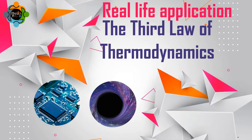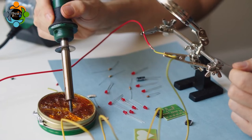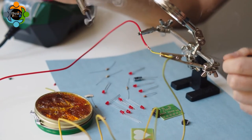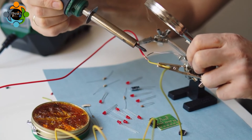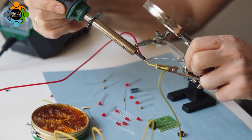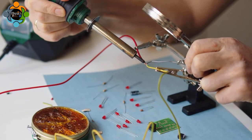One example can be seen in the production of superconductors. Superconductors are materials that exhibit zero electrical resistance at extremely low temperatures. This is because as the temperature drops, the electrons in the material are forced into a state of perfect order, resulting in superconductivity.